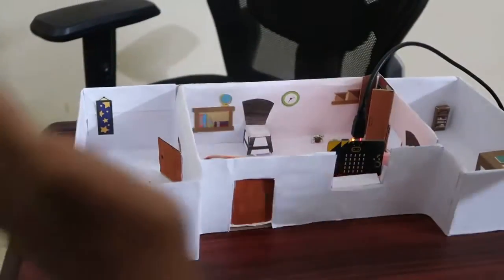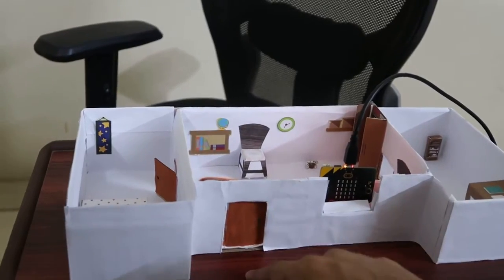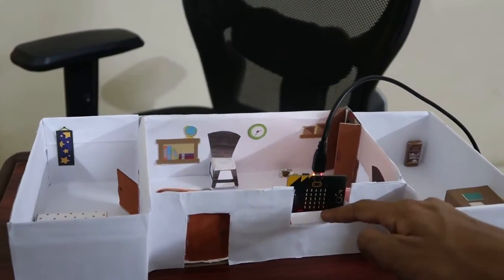So these microbits are connected to servos, motor fans, motion detectors and smoke detectors. So this is the model of the house, this is the main door, this is the main door microbit, this is the living room, this is the bedroom and this is the study room.